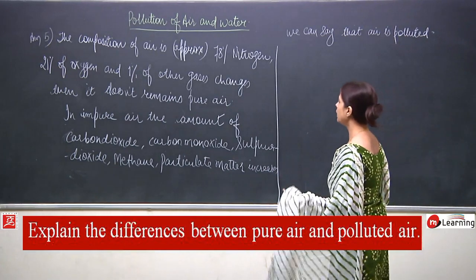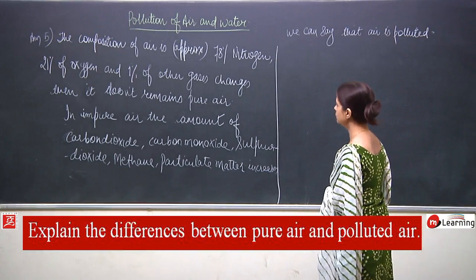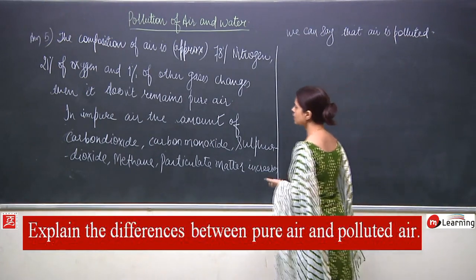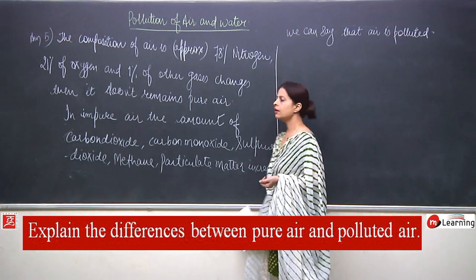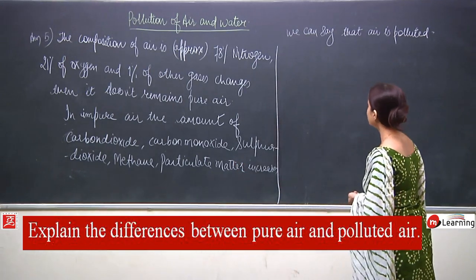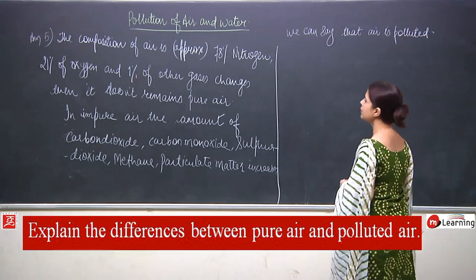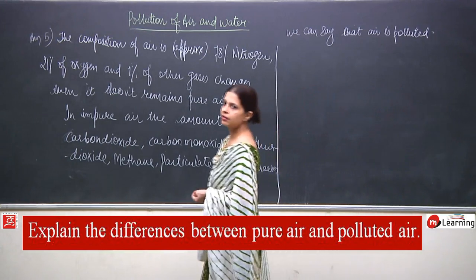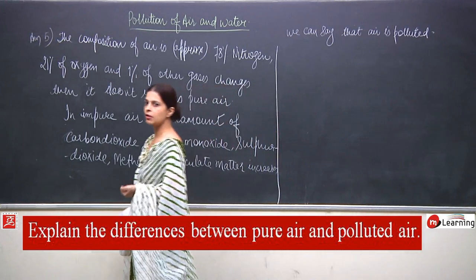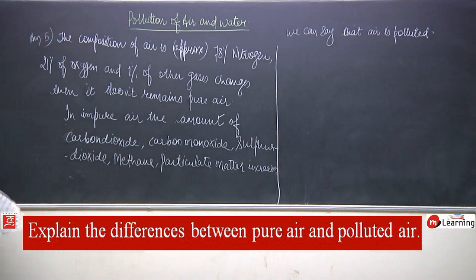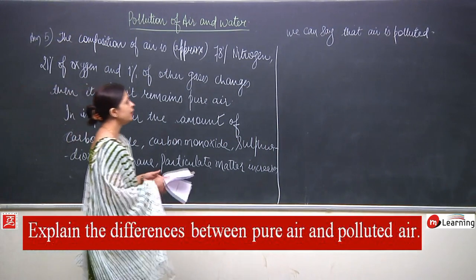In impure air, the amount of carbon dioxide, carbon monoxide, sulphur dioxide, hydrogen, methane, and particulate matter increases — we say the air is polluted. Such air will be very harmful for us and responsible for many different kinds of diseases.